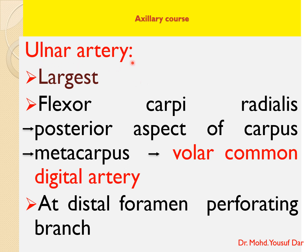Before entering the proximal foramen, the radial artery detaches a branch that runs as the middle deep volar metacarpal artery. This middle deep volar metacarpal artery forms a superficial volar arch with the medial deep volar metacarpal artery. The ulnar artery is the largest of the two terminal branches of the median artery. It runs under the flexor carpi radialis, reaches the posterior aspect of the carpus and then the metacarpus, and continues as the volar common digital artery, which divides into volar proper digital arteries entering both the lateral and medial digits.